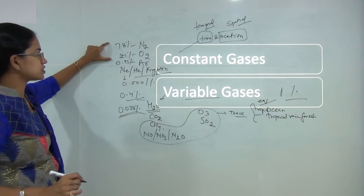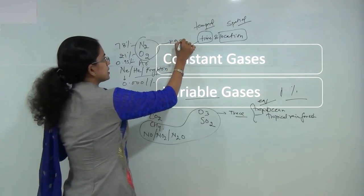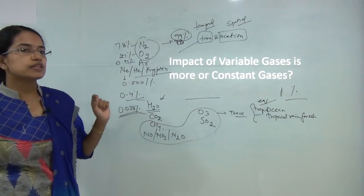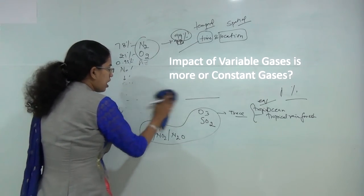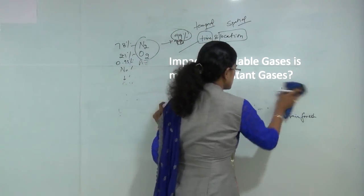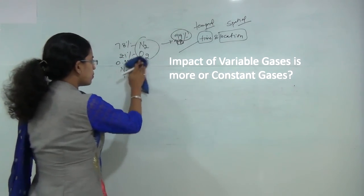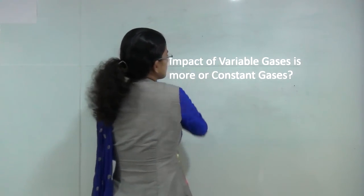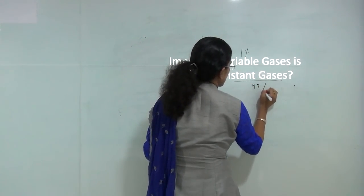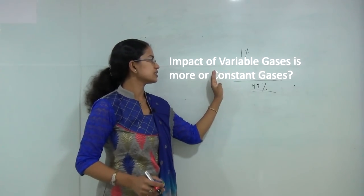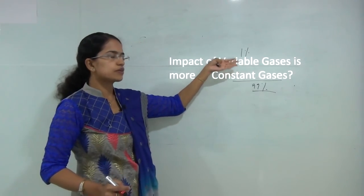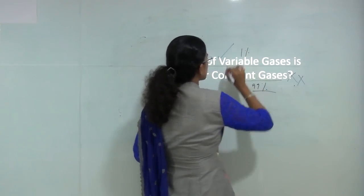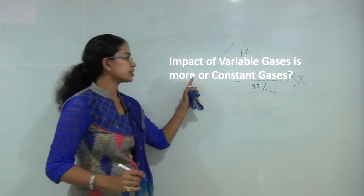These variable gases constitute merely 1%, while nitrogen and oxygen alone contribute to nearly 99% of atmospheric gases. However, the important question is: does the small percentage of variable gases mean they have less impact? The correct answer is that the impact of variable gases is much higher in contrast to constant gases.